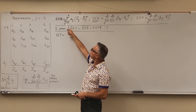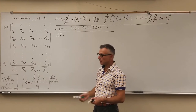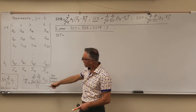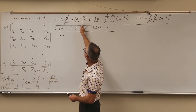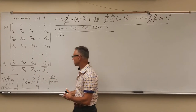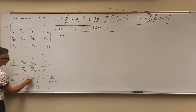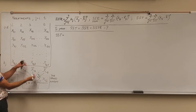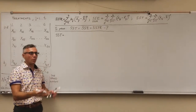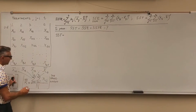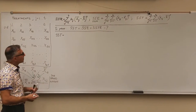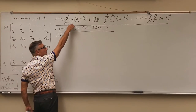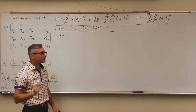SSTR is the sum of squares for the treatments, which we discussed in the lecture. We look at the differences between the average of each treatment and the grand average — that's the green variability. We take those differences, square them, and sum them up: sum of squares for the treatments. There is a weight here — we'll talk about it a little later.